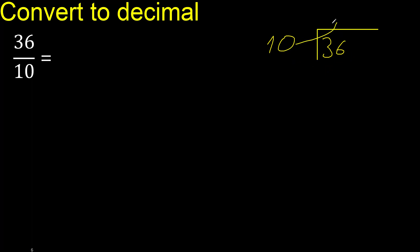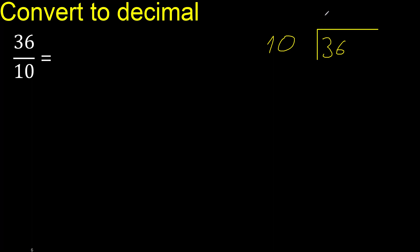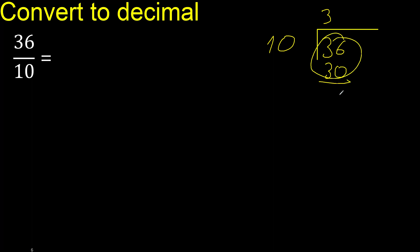Therefore, 10 multiplied by which number is nearest to 36 but not greater? Multiply by 4 is 40 — 40 is greater. Multiply by 3 is 30, which is not greater. Subtract: 36 minus 30 equals 6.